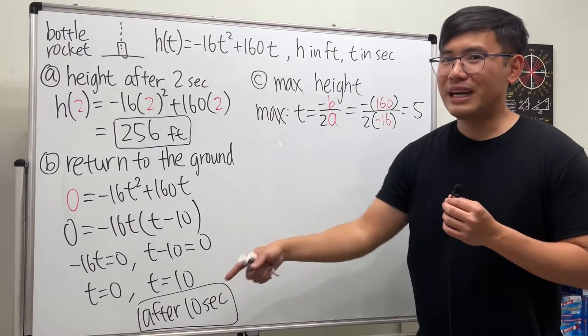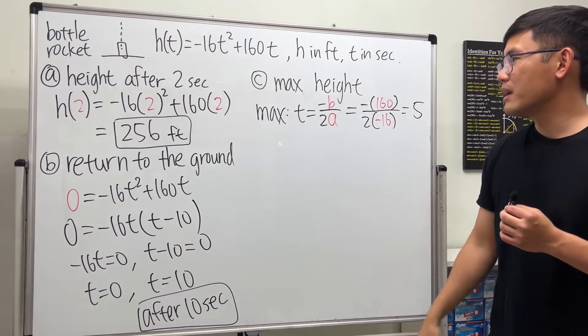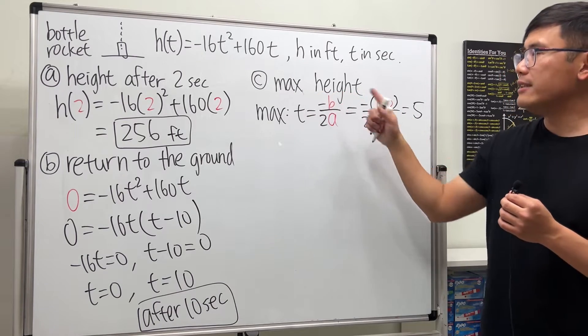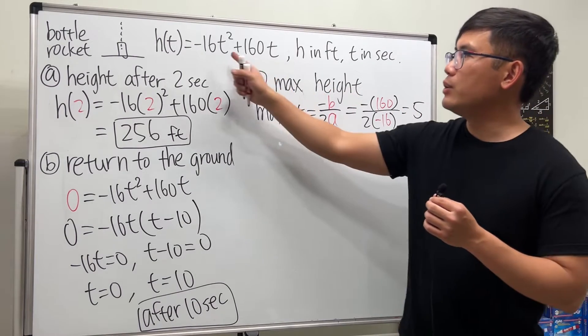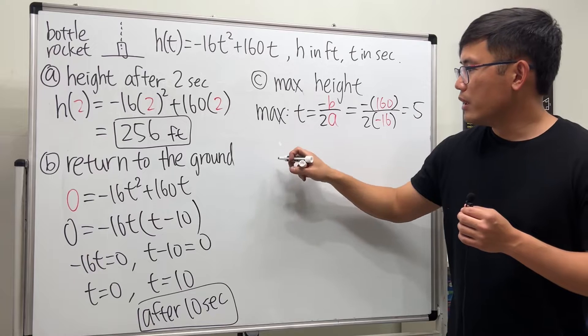If you didn't use that reasoning, then use the vertex formula. We want to find the maximum height though, so we have to put 5 into t here and here.